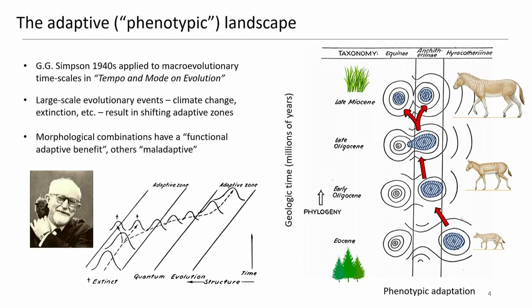Simpson applied this phenotypic adaptive landscape to one of his favorite evolutionary transitions: the horse. He explained that the phenotypic and functional adaptations of horses changed over evolutionary time with a changing climate, particularly with the change from forests to grasslands. This concept of the phenotypic landscape was intriguing and exciting, but its application was pretty limited at the time, largely due to computational challenges central to this kind of analysis.